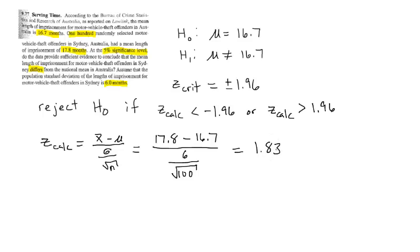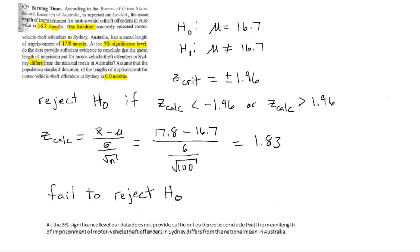We can see that 1.83 is not greater than 1.96, so we are going to fail to reject H0. We need to write a statement: failing to reject H0 means we are saying that mu is equal to 16.7. At the 5% significance level, our data does not provide sufficient evidence to conclude that the mean length of imprisonment of motor vehicle theft offenders in Sydney differs from the national mean in Australia.